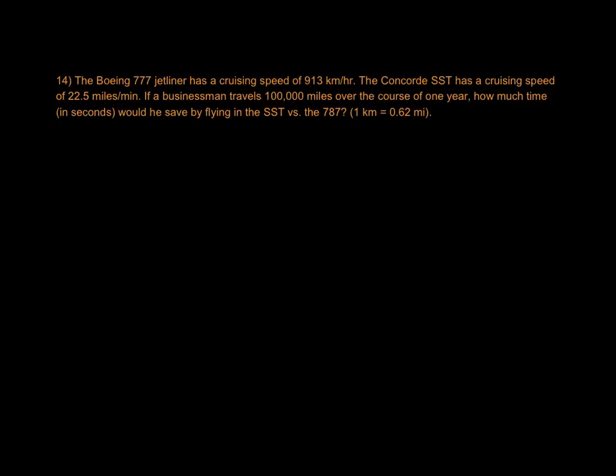The last one is a comparison problem. We're comparing the time it would take to fly 100,000 miles on two different airliners with two different speeds, and the differences that the speeds are given in different units. For the 777, 100,000 miles is the distance, converting miles to kilometers, 0.62 miles per kilometer, and the cruising speed is 913 kilometers in one hour.